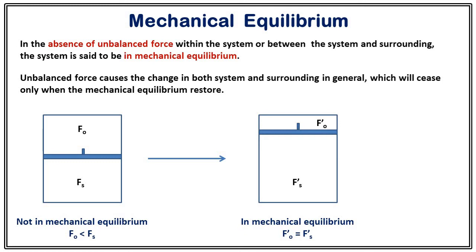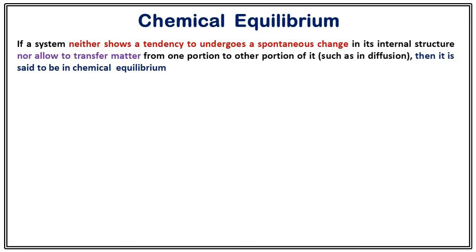The second equilibrium is chemical equilibrium. If a system neither shows a tendency to undergo a spontaneous change in its internal structure — which happens when a chemical reaction occurs — nor allows transfer of matter from one portion to another, then we say the system is in chemical equilibrium. For instance, if one part of the system has a much higher particle density than another, diffusion will transfer matter from the high-density to the low-density region.